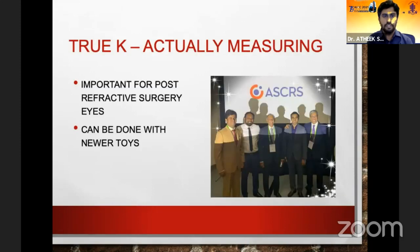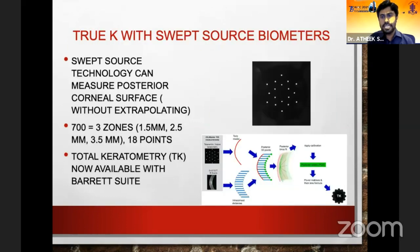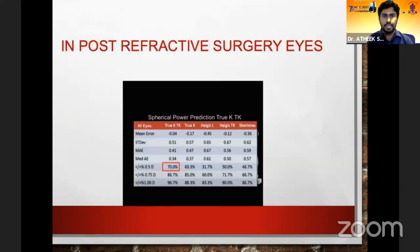At ASCRS 2019, Dr. Barrett delivered a talk explaining that measuring K using swept source-based biometers is even more significant and gives very good values. The reason is that no extrapolation is done — actual measurements of the posterior cornea are obtained directly with swept source-based biometers.